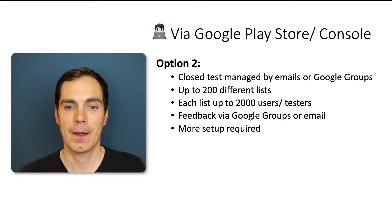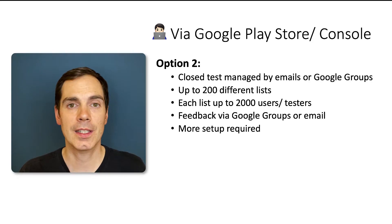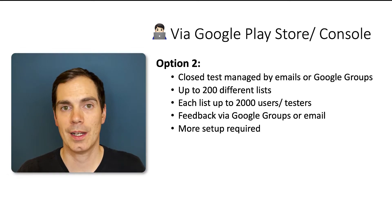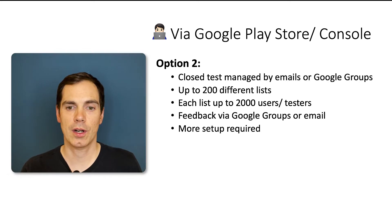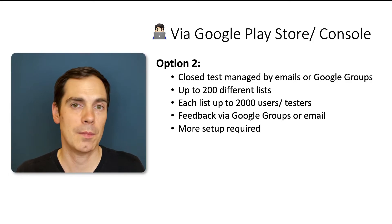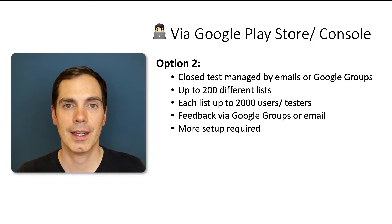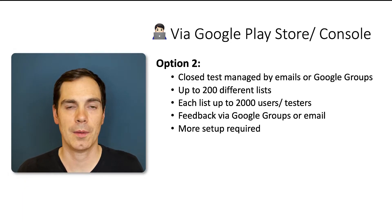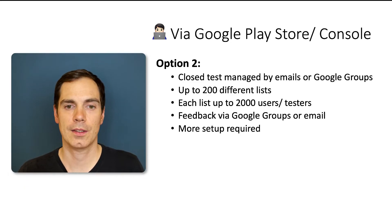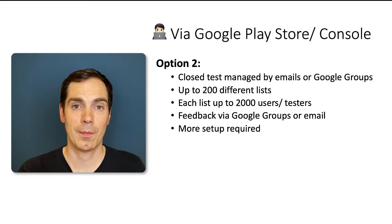This option could be a solution for bigger companies who exceed the 100 internal testers. They can use different lists for different departments and separate those users by department. The hurdle is much lower in that context, because you can invite people saying, hey, department marketing, click that link and give us some feedback on the latest marketing campaigns that we implemented, for example.